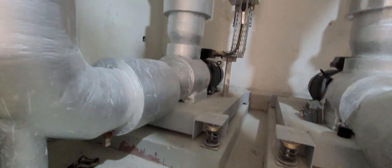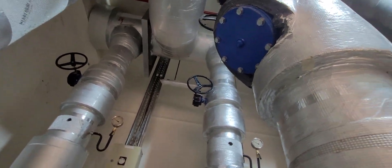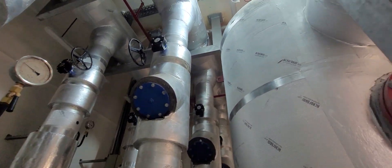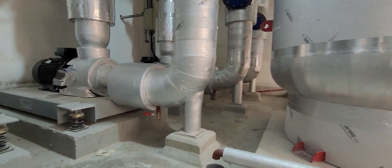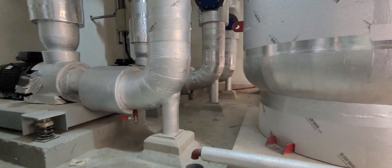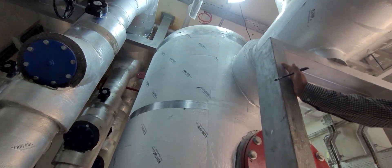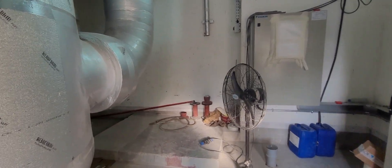This is the 35 storey building, 700 apartments, you can guess it. This is air separator. This pressurizer unit will come here installed.